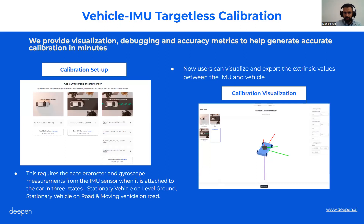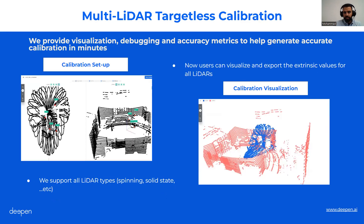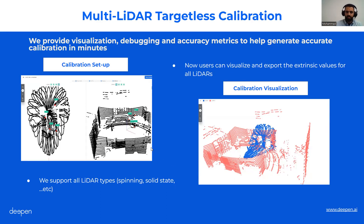We support vehicle-to-IMU calibration. This requires input files with different positions of the vehicle — when parked, when moving — and you upload those IMU extracts to get the extrinsic calibration between vehicle and IMU. For multiple LiDARs, even with very different scanning patterns and different numbers of lasers, this is completely targetless. The flow can be automated if we have information about your sensors; otherwise, you can help the system determine sensor locations and get to the extrinsics within a couple of minutes in our tool.